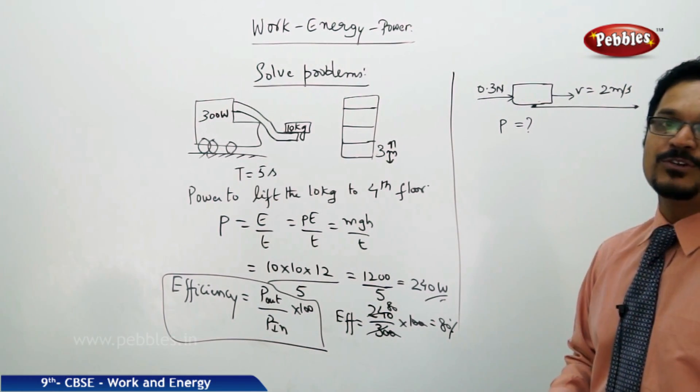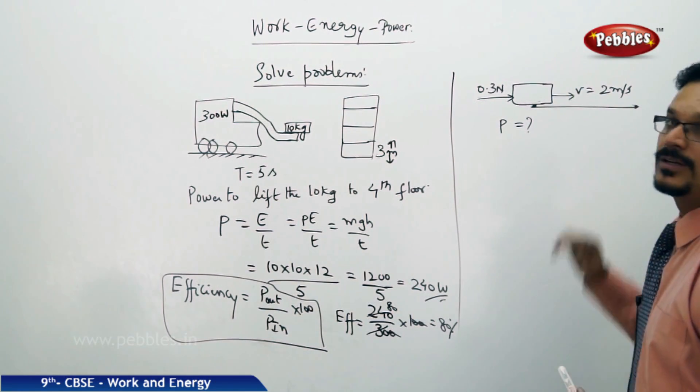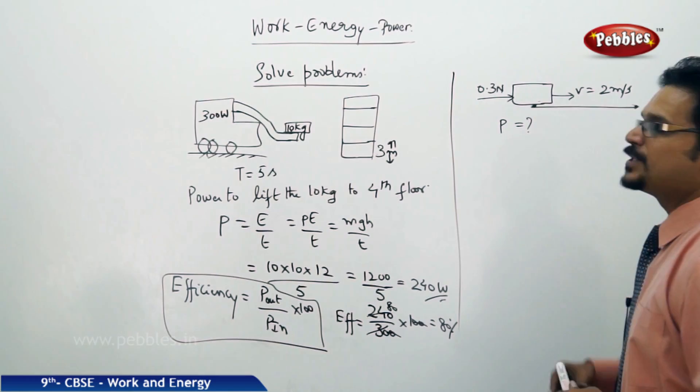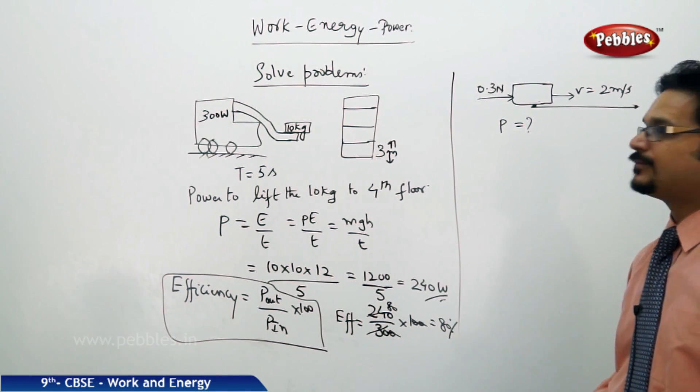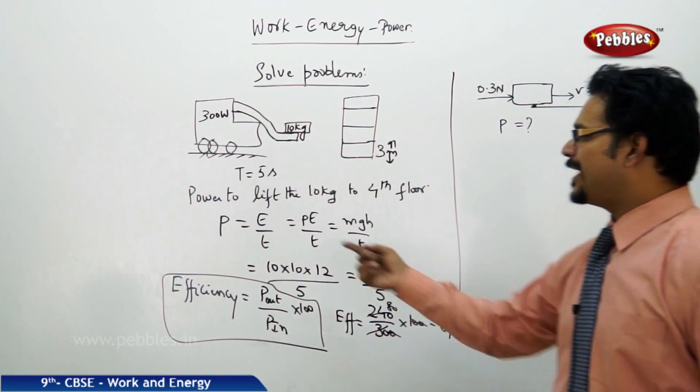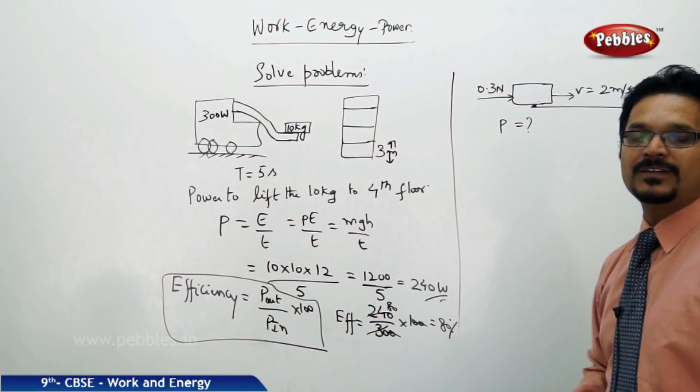The next one. You have applied 0.3 Newtons of force on a block and the block moves with the velocity of 2 meters per second. What is the power? Power formula is energy by time, but where is the energy? Energy is not given.